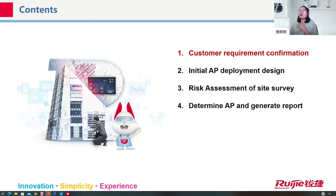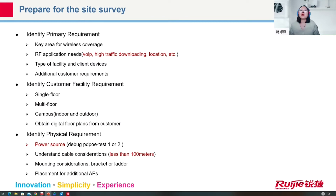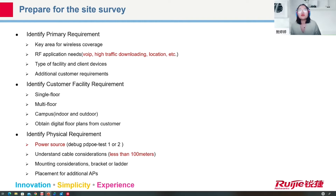The first thing we have to confirm is the requirement of the customer. The requirement indicates the primary requirement — what's the key area of wireless coverage. We hope our AP can cover all the area, but this will take a lot of APs. So we have to know the key area of wireless coverage and what the RF application needs.